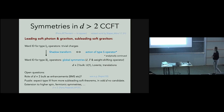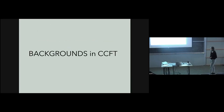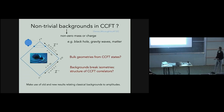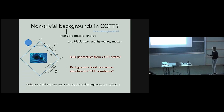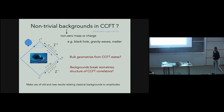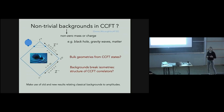Having classified symmetries in two-dimensional and higher-dimensional celestial CFTs, I now turn to the topic of backgrounds. We would like to characterize backgrounds with non-zero mass or charge—including black holes, gravitational waves, and matter—purely from the boundary perspective. Two questions: how do bulk geometries arise as operators acting on the vacuum state of the dual theory on the celestial sphere, and since backgrounds break isometries, what does this mean for celestial conformal correlation functions?